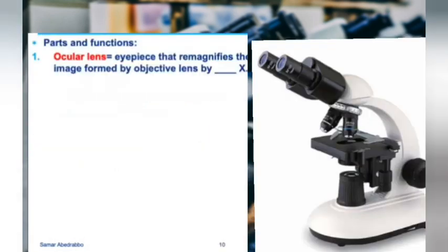Now we're going to go through the parts of the microscope. Unfortunately, because of quarantine you're not in lab, so you can't actually see the microscope, but I want you to understand it by looking at a picture, because in your career you will probably use one. Right here, where you put your eyes, is called the ocular lens.